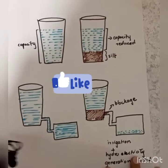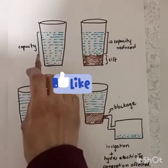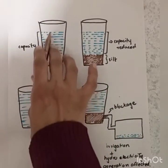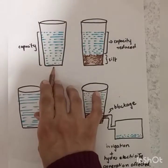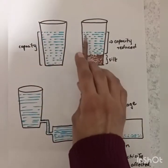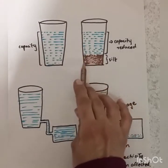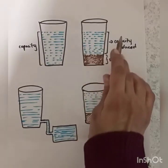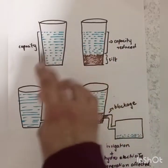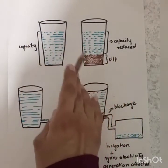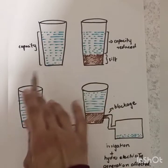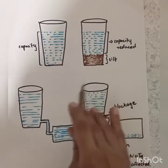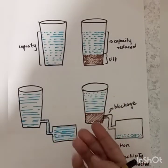To understand this process better, let's look at this example. You can see two glasses in front of you. Glass number one shows the full capacity. Glass number two has the same capacity, but silt has deposited itself at the bottom, so the capacity of this glass is reduced. Exactly this happens with canals, dams, and all the other reservoirs we talked about — when silt deposits at their beds, the capacity of those reservoirs automatically gets reduced.